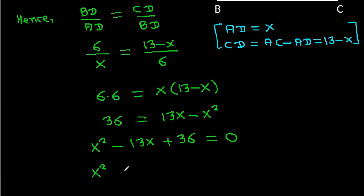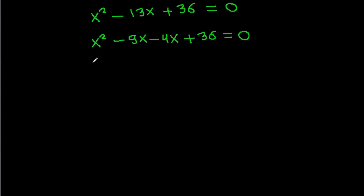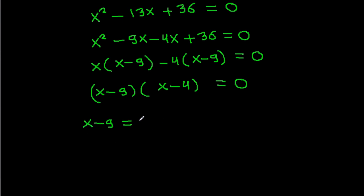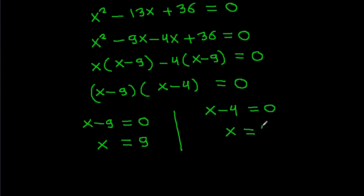Factoring X squared minus 13X plus 36 equals 0, we split as minus 9X minus 4X plus 36, giving (X minus 9)(X minus 4) equals 0. So either X minus 9 equals 0, meaning X equals 9, or X minus 4 equals 0, meaning X equals 4.